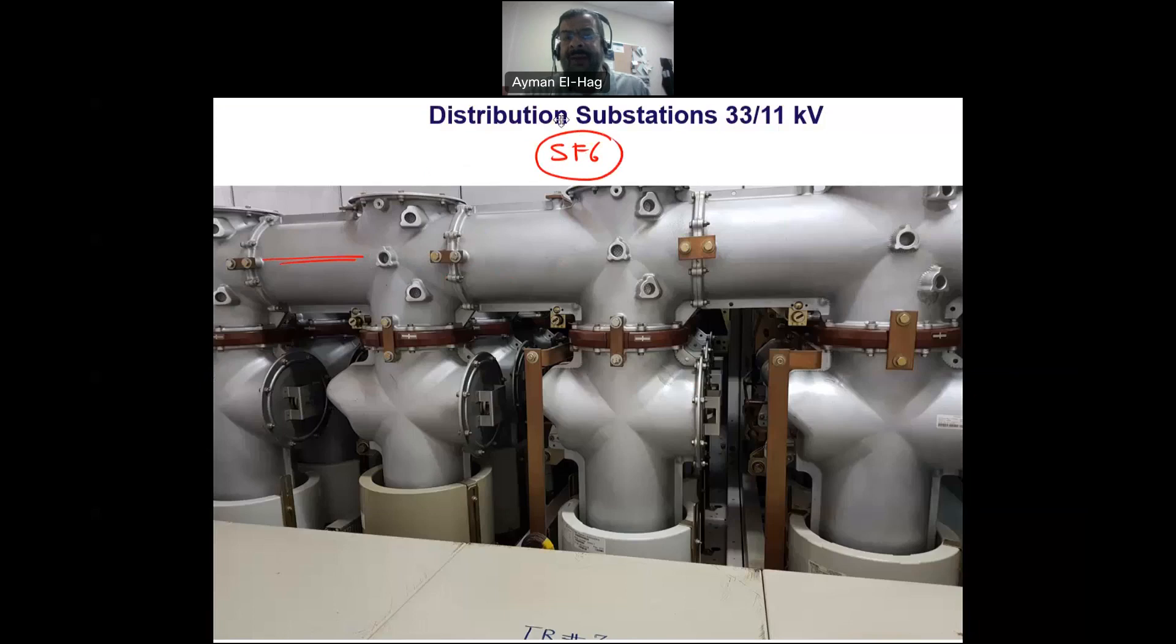SF6 is well known as a very good insulating gas that we use in high voltage applications. You see these bus parts are all for grounding. The whole structure outside is grounded, so even if the substation is energized, you can safely touch the substation because everything has zero potential.